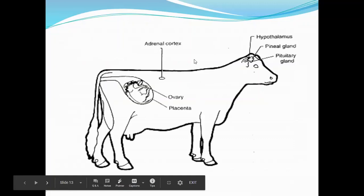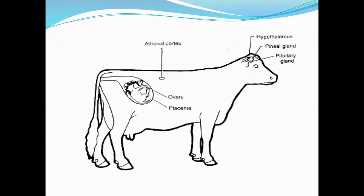So these are the different endocrine glands involved: the hypothalamus, the pituitary gland, and the ovaries. The pineal gland will be discussed later when we cover seasonal breeders. The adrenal cortex, located cranial to the kidneys, will be discussed when we cover parturition in another chapter.